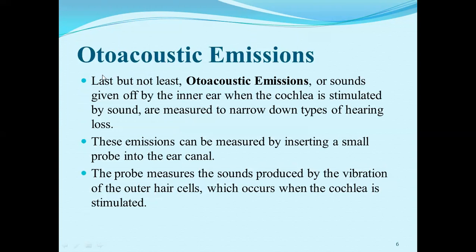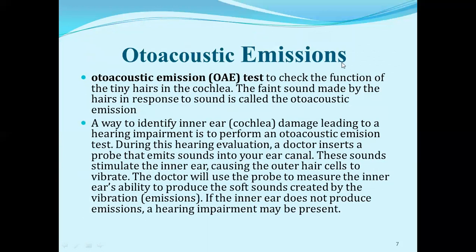Otoacoustic emissions are sounds given off by the inner ear when the cochlea is stimulated by sound, and are measured to narrow down the type of hearing loss. These emissions can be measured by inserting a small probe into the ear canal. The probe measures the sounds produced by the vibration of the outer hair cells, which occurs when the cochlea is stimulated. The OAE test checks the function of the tiny hair cells in the cochlea. When hair cells respond to sound, that sound made by a hair cell in response to sound is called an otoacoustic emission.